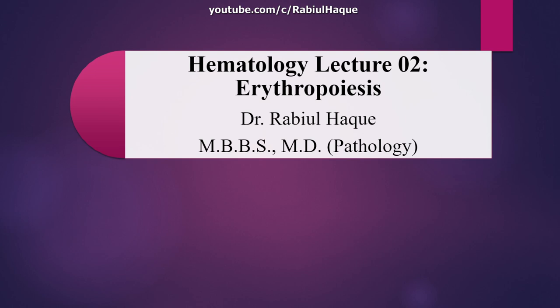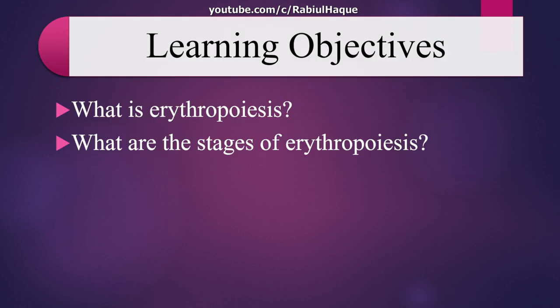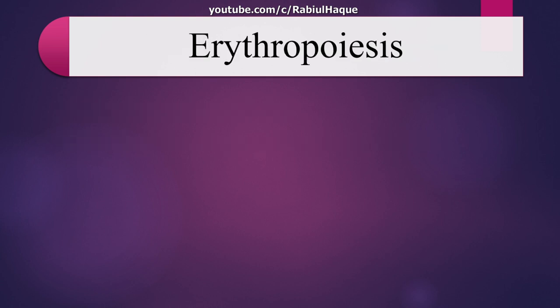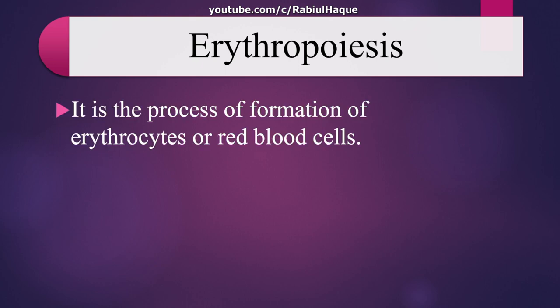In this lecture, we will learn about the various stages of erythropoiesis. Recall from the first lecture of this series: hematopoiesis is the formation of blood cells, and erythropoiesis refers to the process of formation of erythrocytes or red blood cells. So in this lecture, we will talk briefly about the various stages of erythropoiesis.